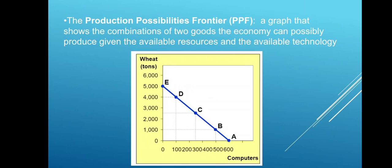PPF — the production possibility frontier — is a graph that shows the combination of two goods the economy can possibly produce given the available resources and the available technology. Here is an example of a PPF of wheat and computers. To obtain 600 computers, you need to give up 5,000 tons of wheat.